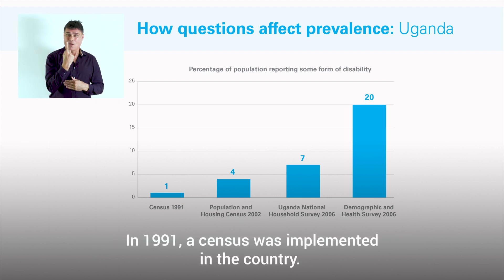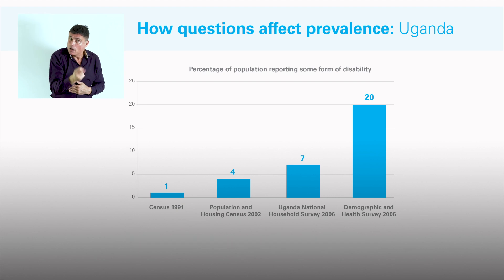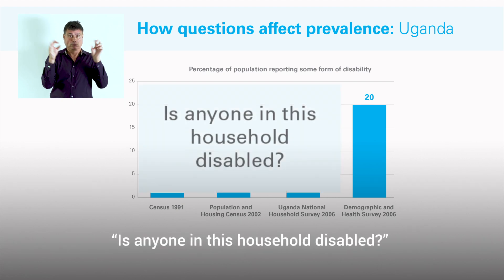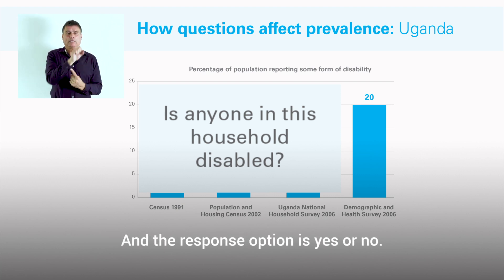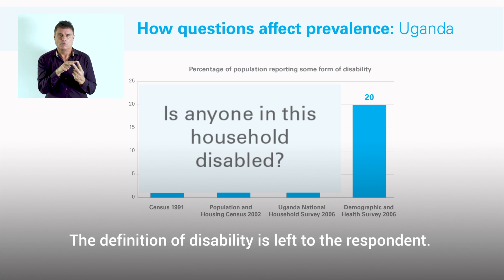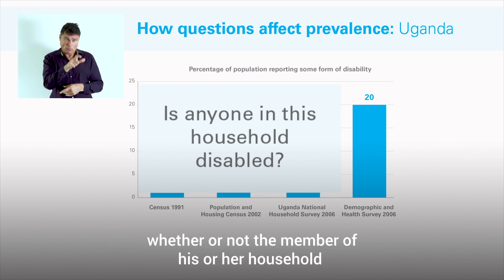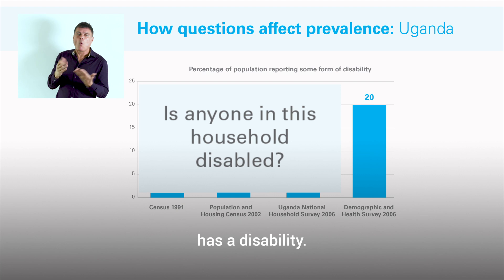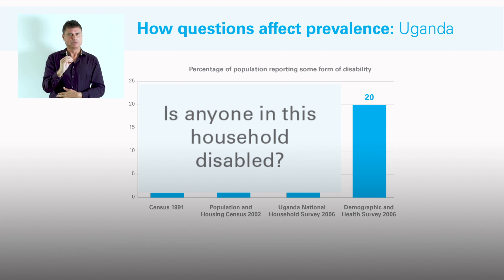In 1991, a census was implemented in Uganda. One question was included to identify persons with disabilities: 'Is anyone in this household disabled?' with a yes or no response. The definition of disability was left entirely to the respondent. This questionnaire produced a disability prevalence of 1%.